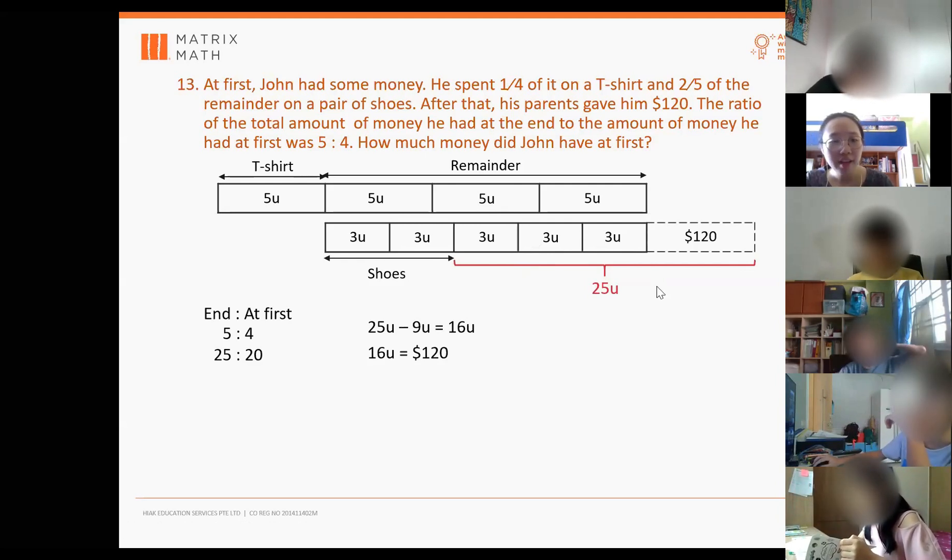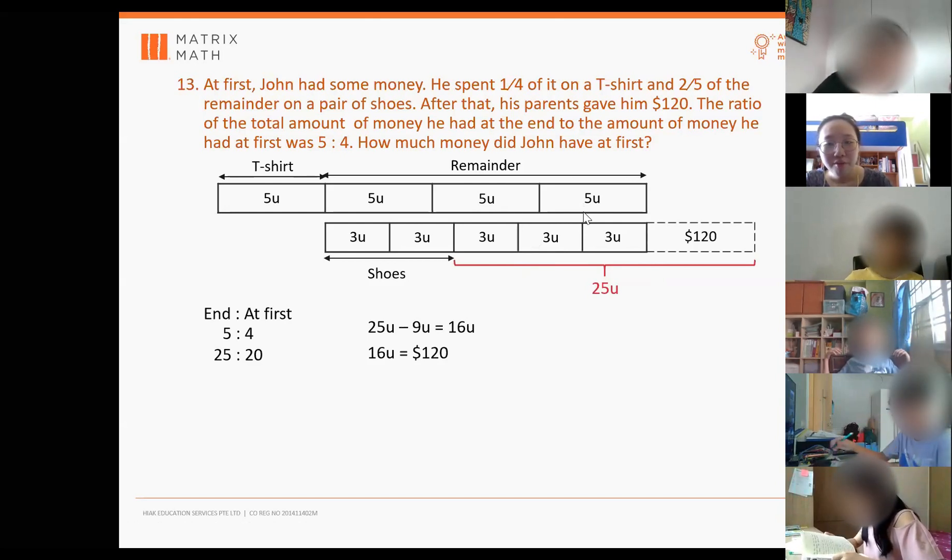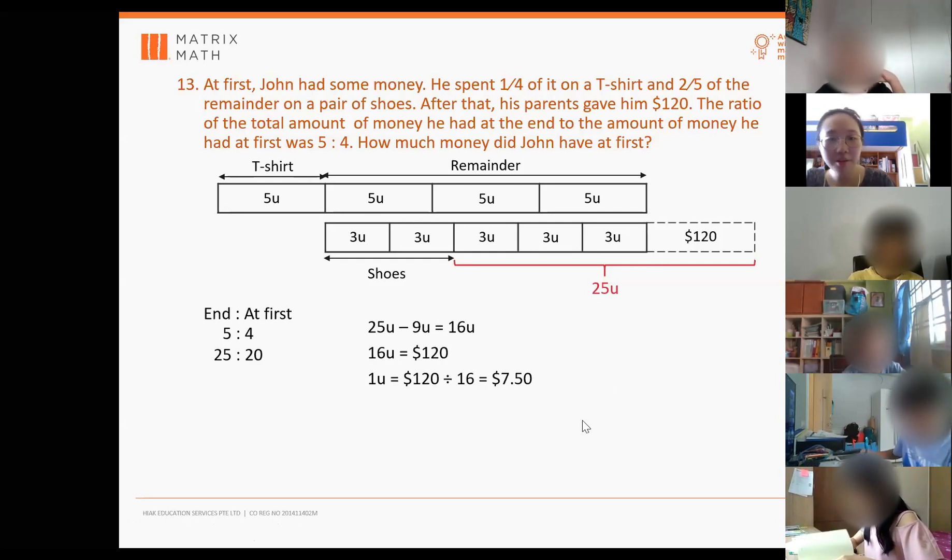So this is the 9 units. So 25 minus your 9 units because 3, 3, 3, 3 is 9. So your 16 units is $120. So just find one unit from there. At first will be all the 20 units.